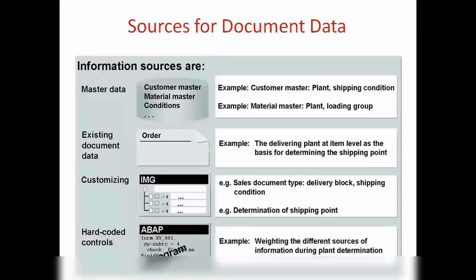What are the sources of data for a transaction — for example, a sales order? In a sales order, we have different types of information coming from various sources. The first source is master data: customer master and material master. The customer master provides information about the customer — their plant, shipping point, sales area, sales office and so on. The material master provides information relevant to the sales order.